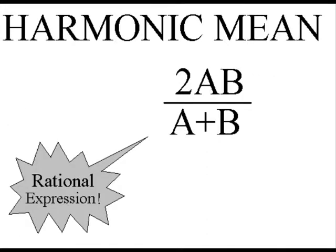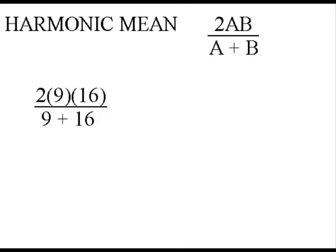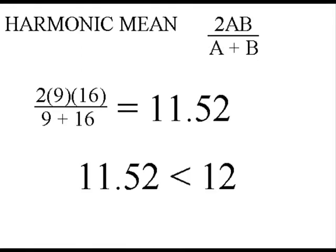The actual formula for average rate is 2 times A times B over A plus B. So the actual rate for the beach example would be 2 times 40 times 60 over 40 plus 60, which equals 48. If you plug your rates into this formula, it comes out to something less than 12.